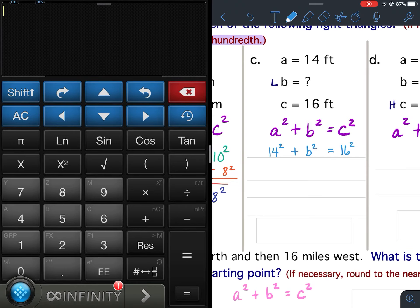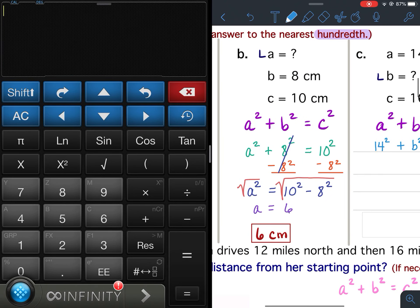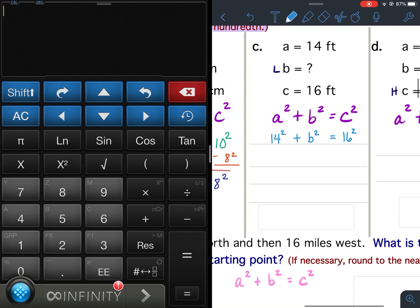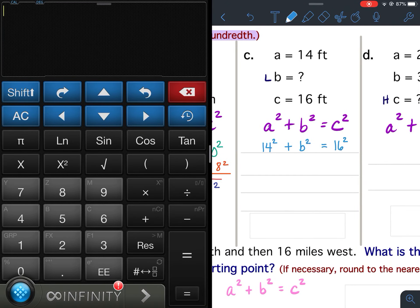Now, on A, we showed the subtraction from both sides. Notice, see here how I put minus 8 squared. We could do that, but since it takes up so much room to do some of these...